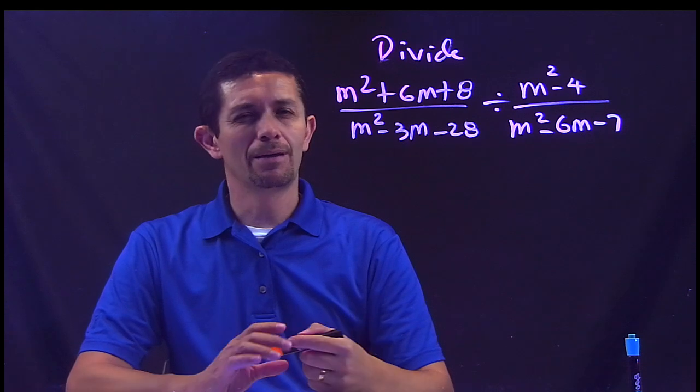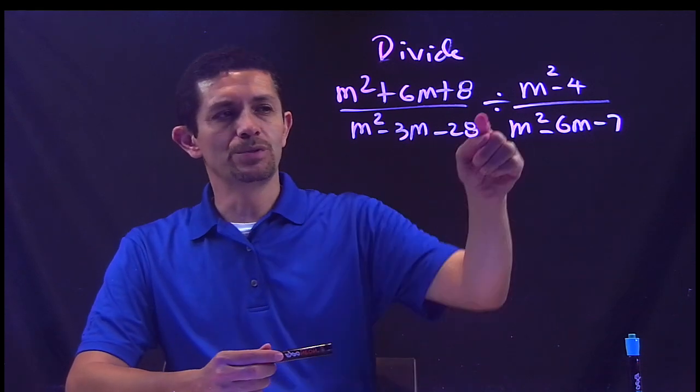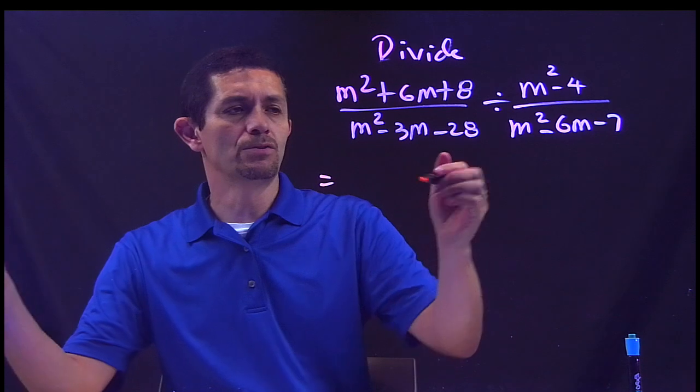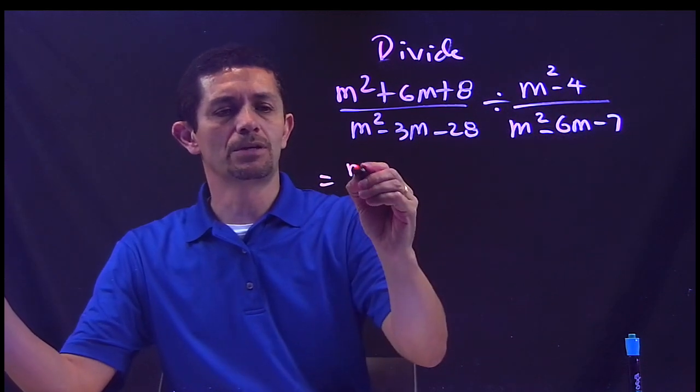Now when I have that, the main thing, the first thing I want to do is get rid of the division sign. So what I'm gonna do is I'm gonna flip the second fraction, so I'm gonna keep m squared plus 6m plus 8 over m squared minus 3m.